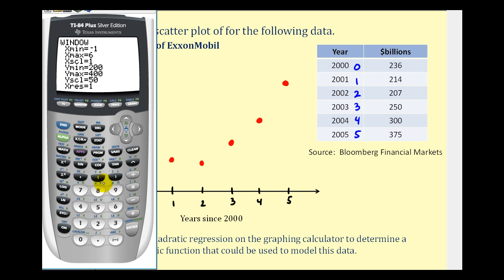Now let's turn the stat plot on. We'll press second, y equals. It's actually already on, but let's go ahead and press enter. If it wasn't on, we'd place the cursor here where it's blinking on on and press enter. The scatter plot is the first option, and we have L1 and L2 for x and y. So everything looks good. Let's go ahead and press graph. And we can see that our scatter plot on the calculator is very similar to the scatter plot that we did by hand.